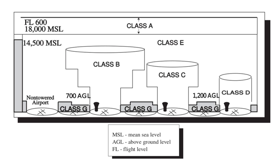Some Class B airports within Class B airspaces prohibit student pilots from taking off and landing there. In addition, some Class B airspaces prohibit special VFR flights. Certain Class B airports have a Mode C veil encompassing airspace within 30 nautical miles of the airport. Aircraft operating within the Mode C veil must have an operating Mode C transponder up to 10,000 feet, unless the aircraft is certified without an engine-driven electrical system and operates outside the Class B and below its ceiling and below 10,000 feet MSL.